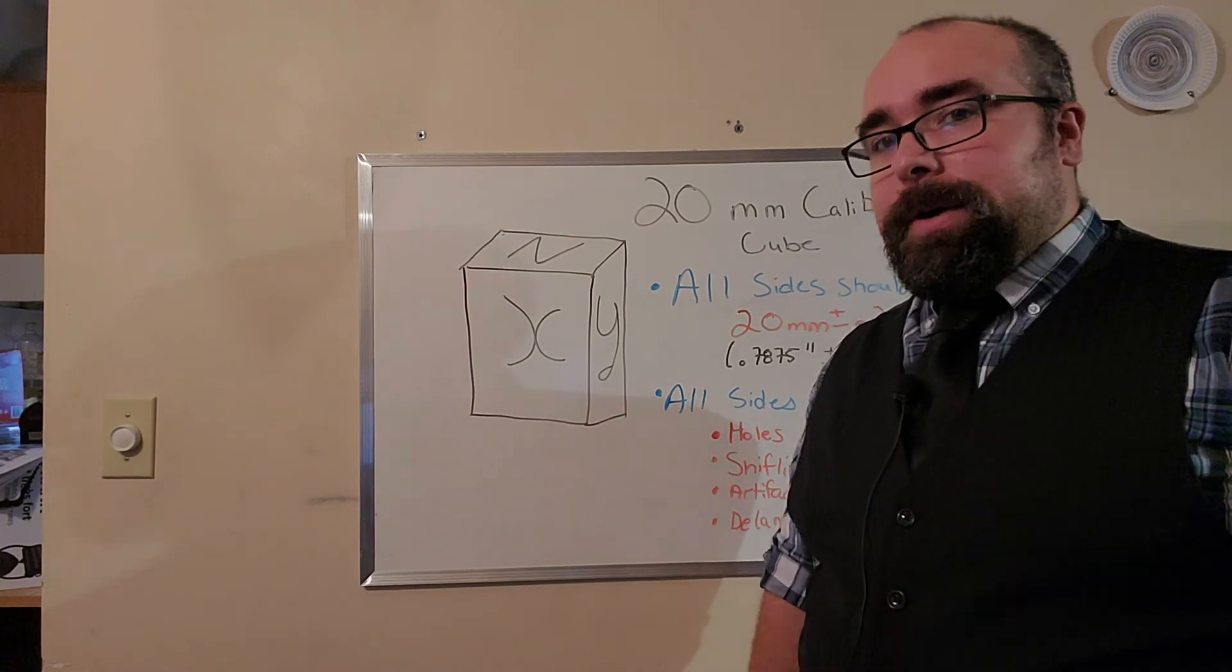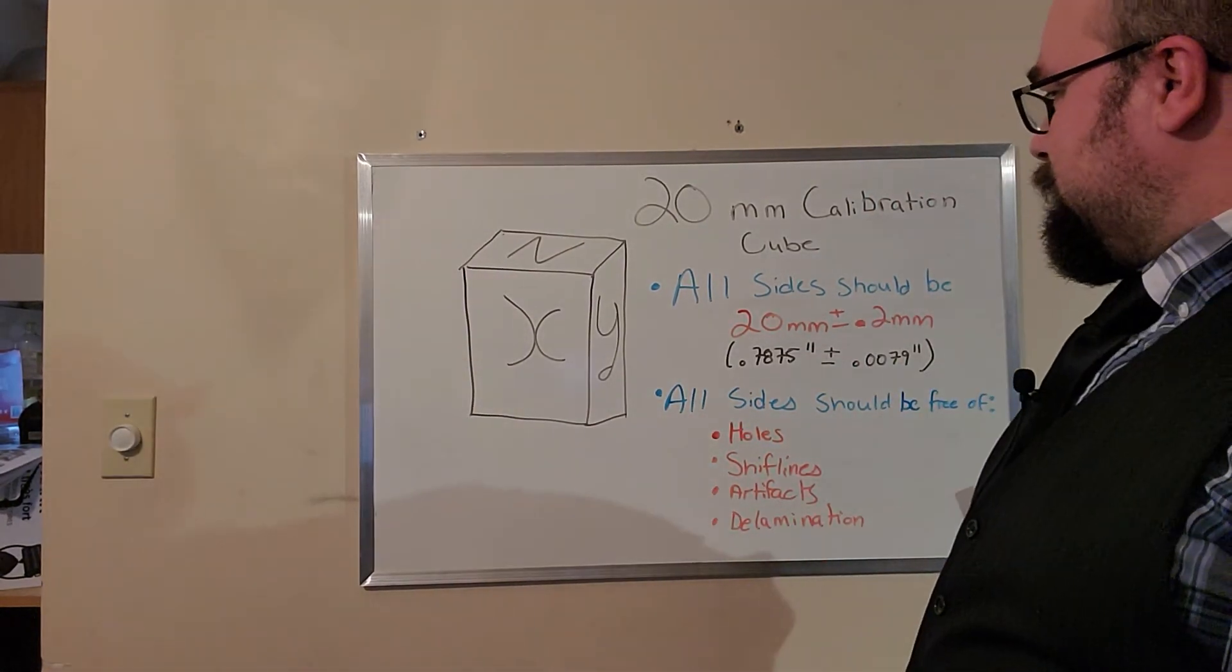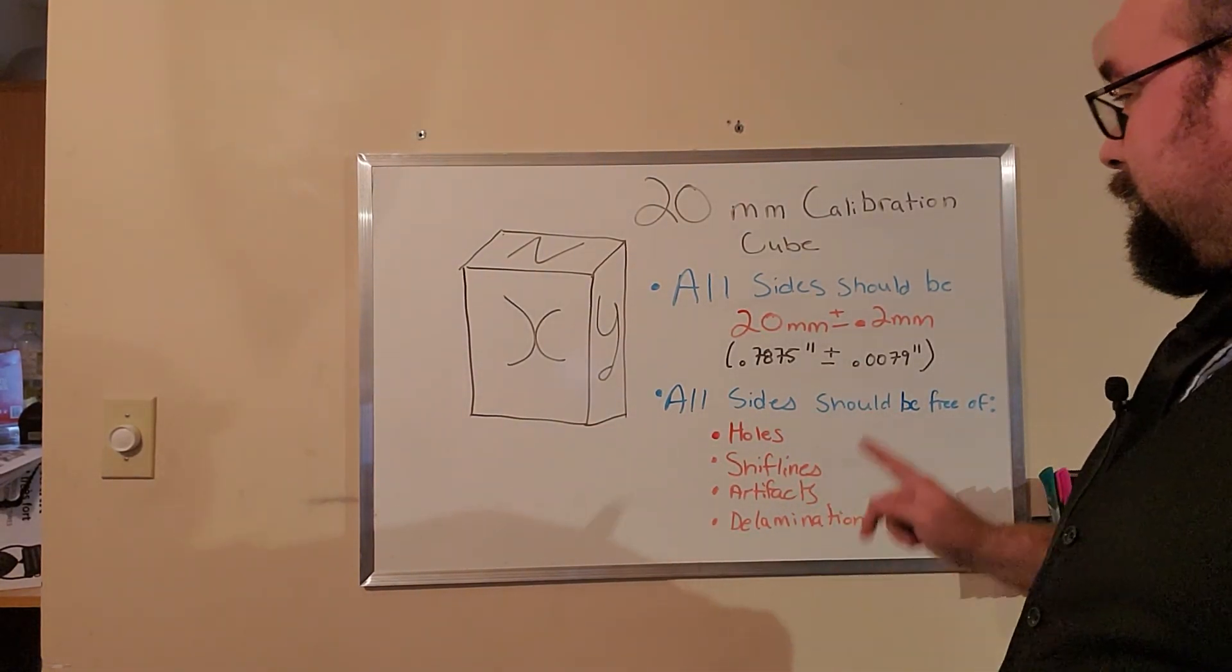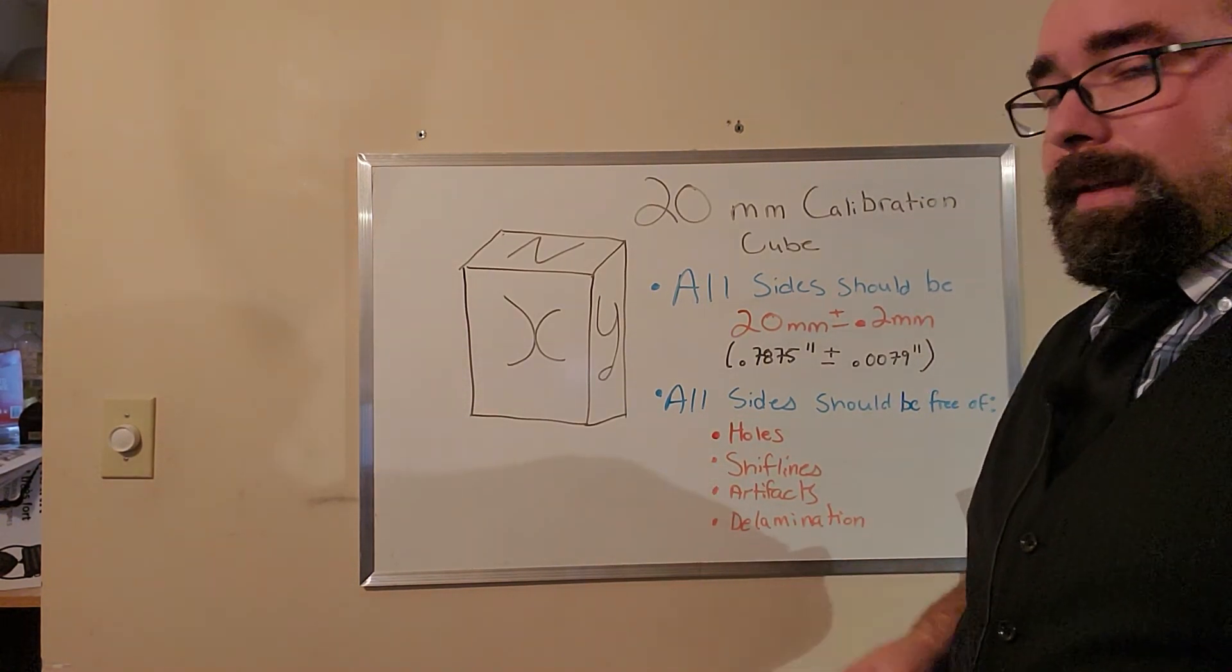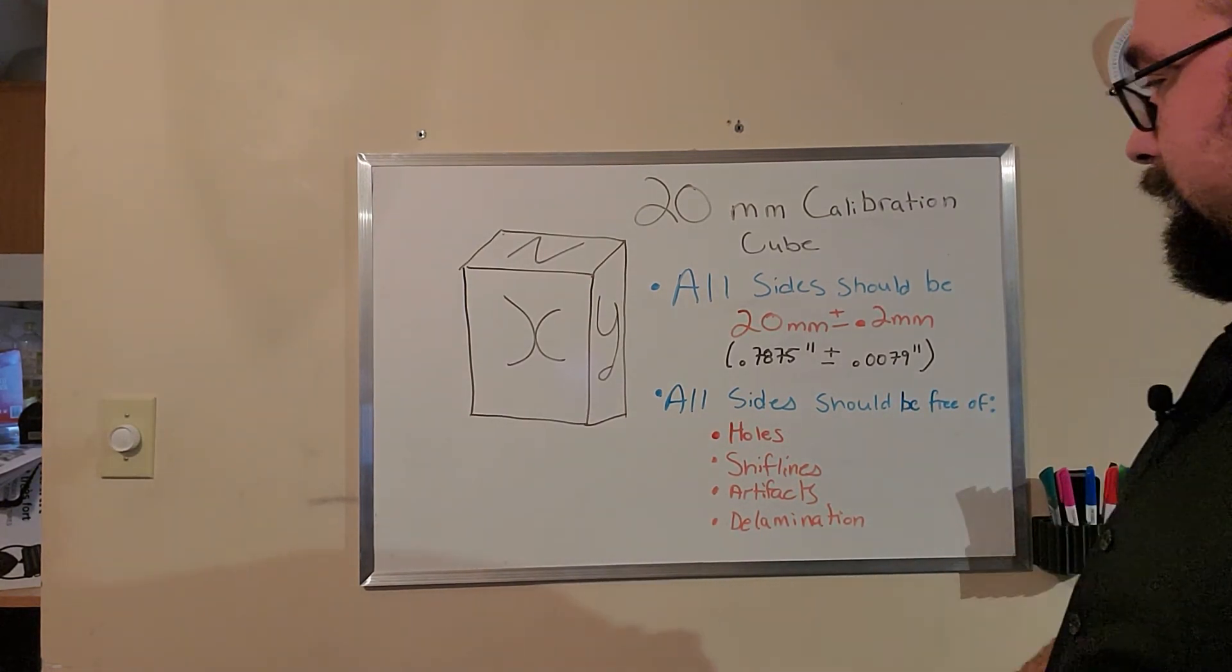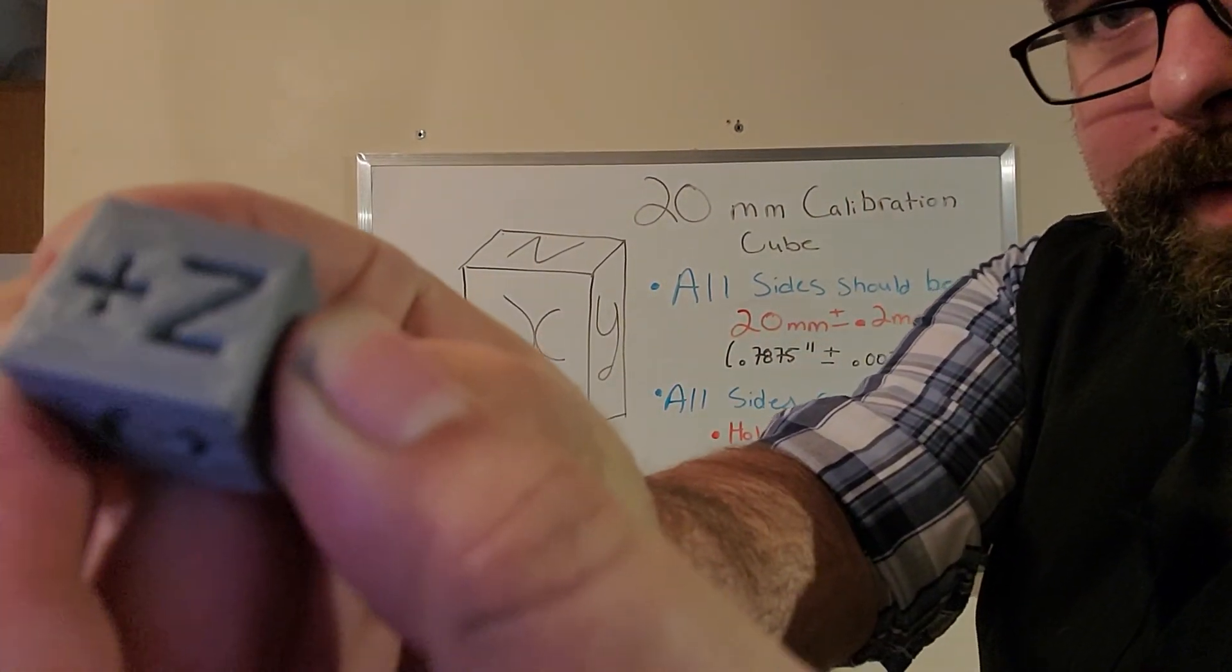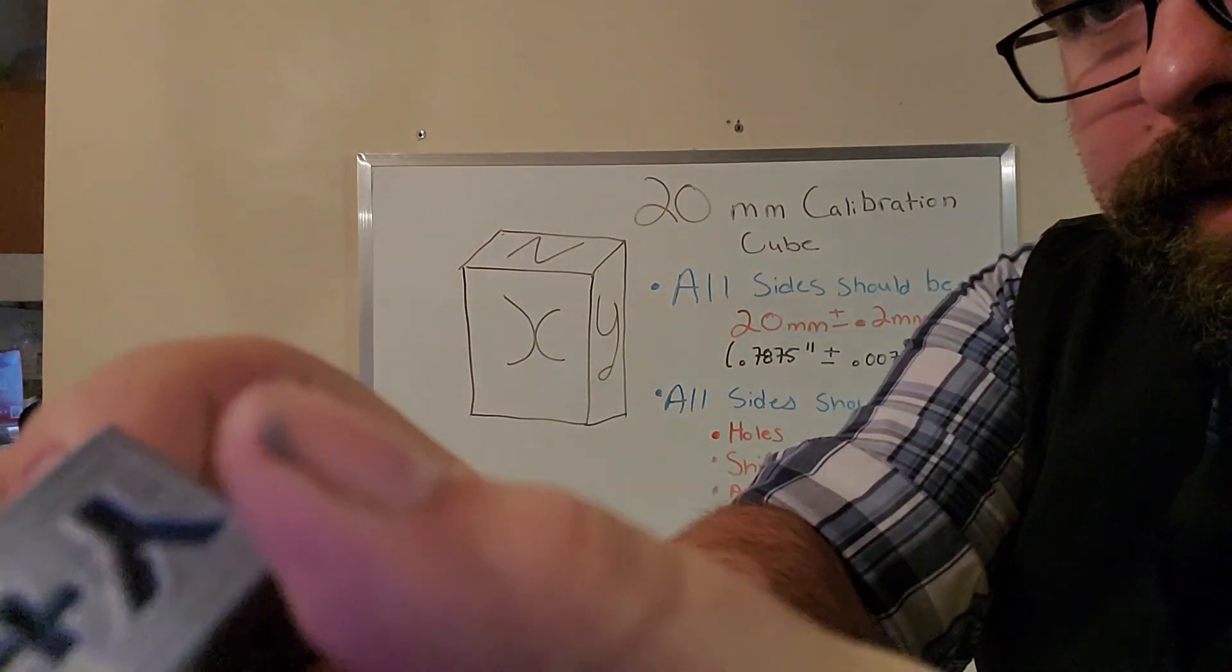And now we're going to talk about what we're looking for in our 20 mil calibration cube. So all sides should be 20 mil plus or minus 0.2 millimeters. That's 0.7875 inches plus or minus 0.0079, or about 8 thousandths give or take for my imperial friends. And then on the actual surfaces, we're going to take a real good look here.